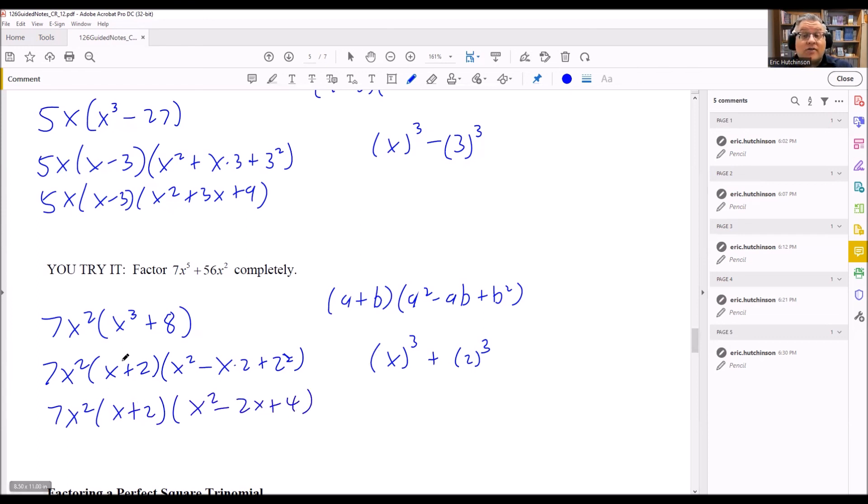And now that would be considered fully factored. Because we took out the common factor, and we were left with a sum of cubes. So we're able to use the sum of cubes formula to factor that completely.